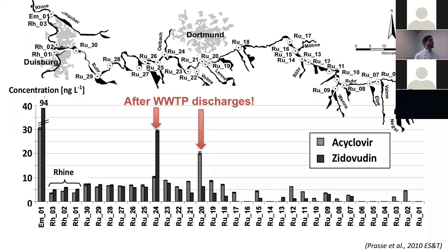A study in Germany on the River Ruhr involved an extensive sampling campaign at more than 35 locations along the river. This graph shows concentrations of two antiviral drugs — acyclovir and zidovudine — and clearly shows the impact of wastewater treatment plant discharges. Two major treatment plants discharged into the River Ruhr, and this is clearly indicated by the strong increases of antiviral drugs, especially at Ruhr 20 and Ruhr 24.